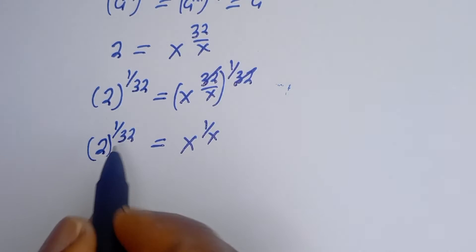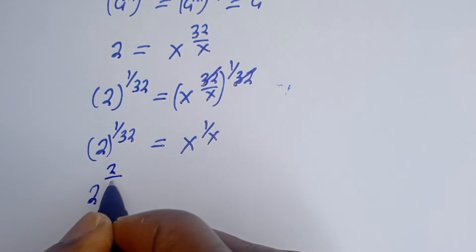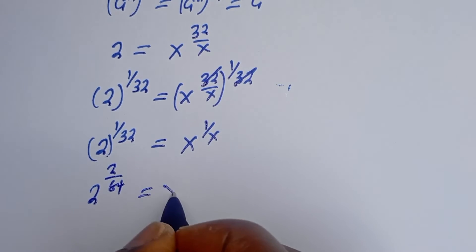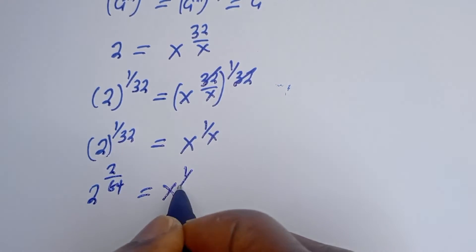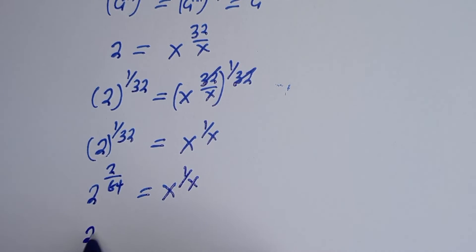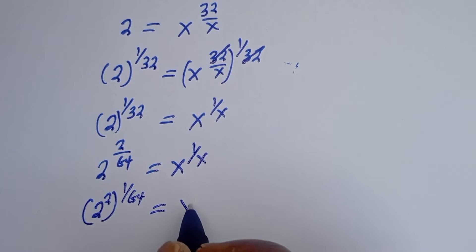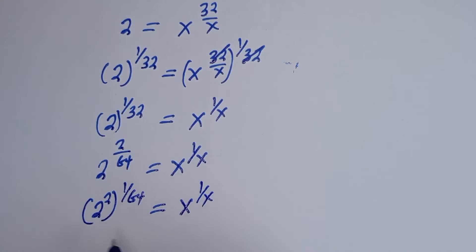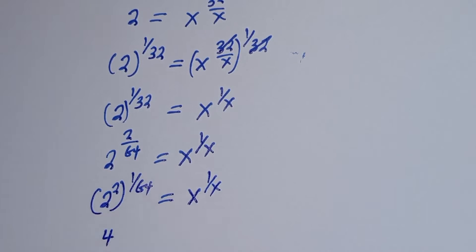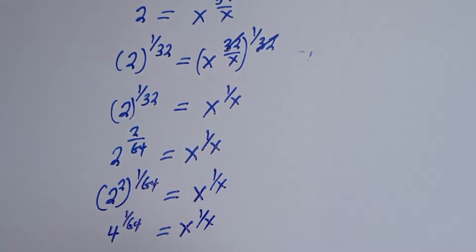Then 2 to the power of 1 over 32 is equal to 2 over 64, which equals S to the power of 1 over S. From the same rule, this can be written as 2 squared to the power of 1 over 64 is equal to S to the power of 1 over S. And 2 squared is 4, so 4 to the power of 1 over 64 is equal to S to the power of 1 over S.